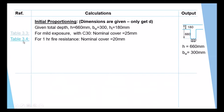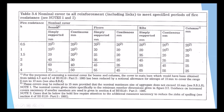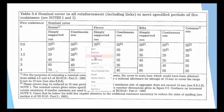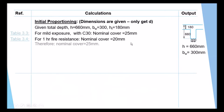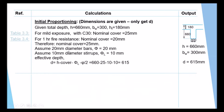We assume 20 millimeter diameter for the main bar and 10 millimeter diameter for the links. So we can calculate D: D equals H minus cover minus diameter of link minus half the diameter of the bar. This gives D equals 615 millimeter. That is all we need from the initial proportioning since the dimensions were already given.